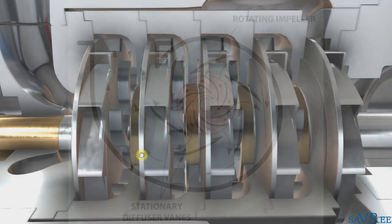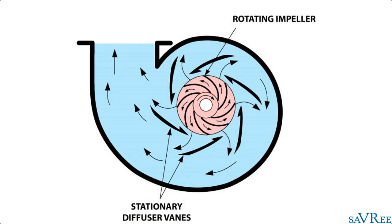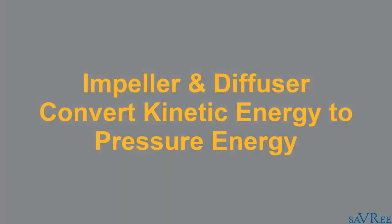The liquid enters the eye of the impeller, and is then thrown outwards radially into the diffuser casing. Once it goes into the diffuser, it is then going to change direction, and pass out of the diffuser. The purpose of the impeller is to reduce the velocity and increase the pressure. The purpose of the diffuser is also to reduce the velocity and increase the pressure.